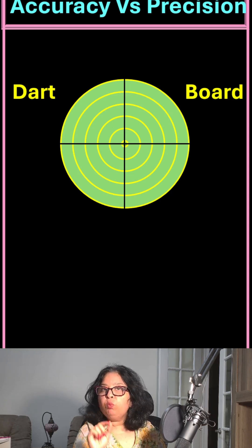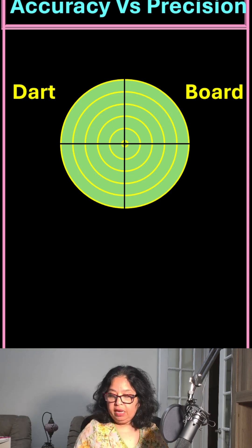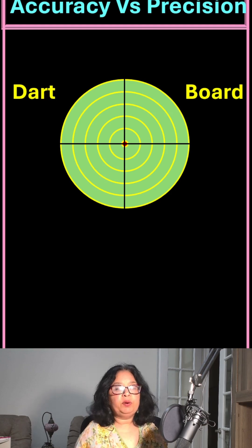My goal here is to throw at least one of the four darts that I have at the bullseye, which is at the center.